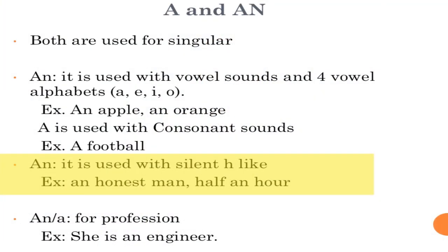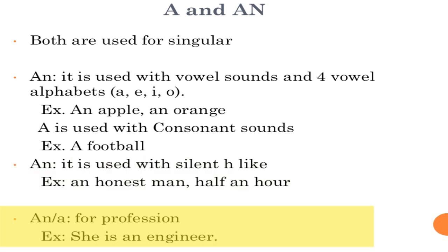Rule number three: we use 'an' with silent 'h'. For example, 'honest' — the 'h' is silent, so we say 'an honest'. Similarly, 'an hour' — the 'h' is silent, so we use 'an'. Rule number four: we use 'a' or 'an' with professions. For example, 'he is a doctor', 'she is an engineer', 'he is a lawyer'. If the profession starts with a vowel sound, use 'an'; otherwise use 'a'.